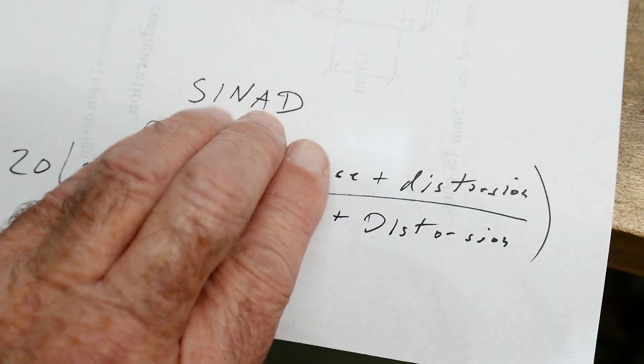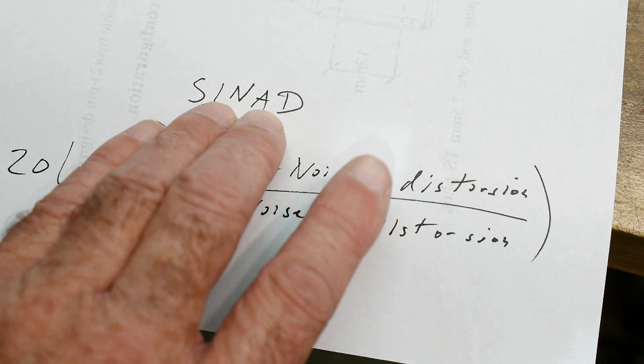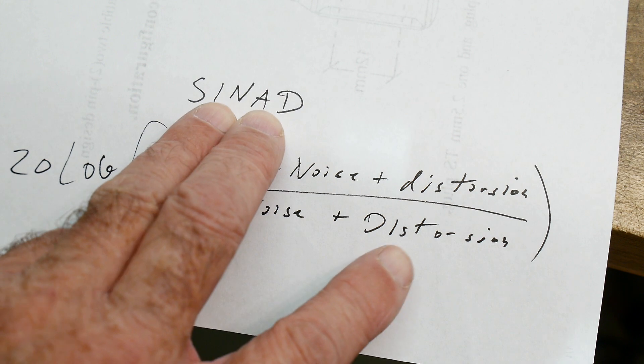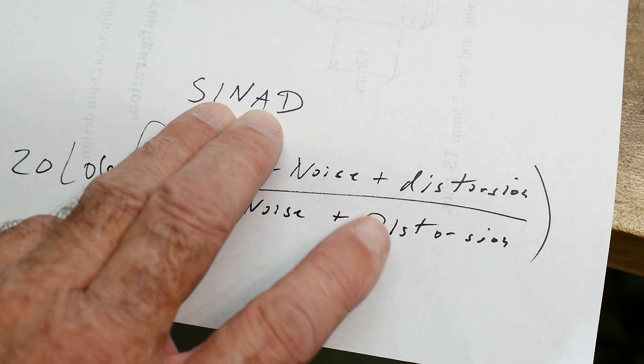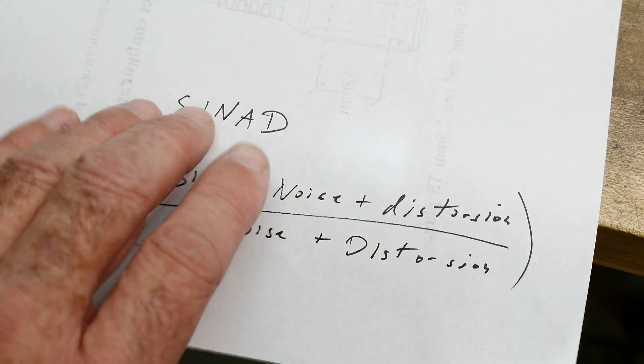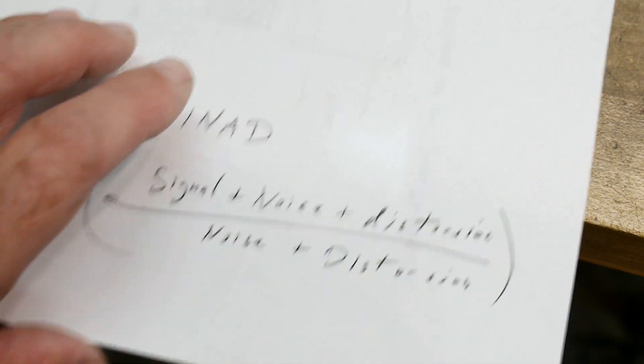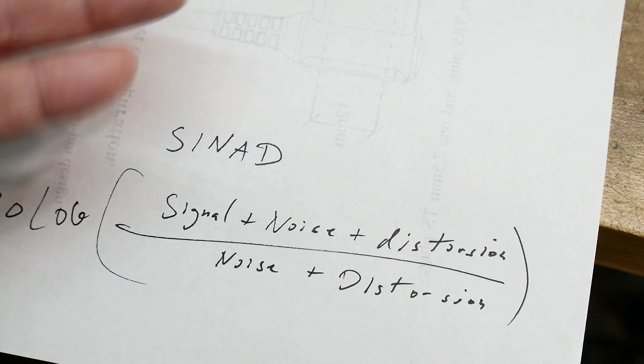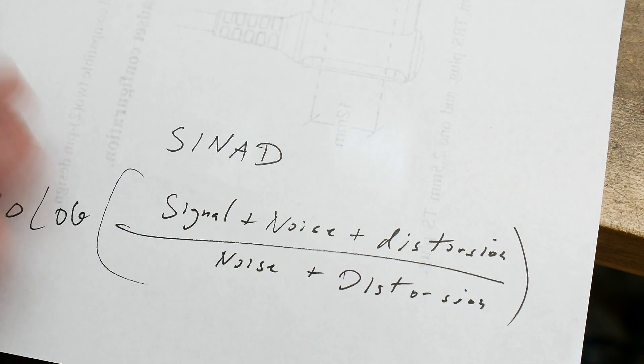What we're going to do is we're going to measure the output of the radio's speaker, the audio signal output. We're going to measure the signal that we hear. So we're going to have the radio receive a tone, 400 Hertz or a thousand Hertz something like that.